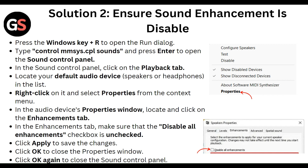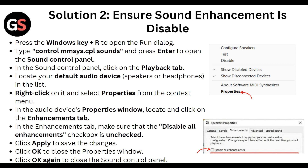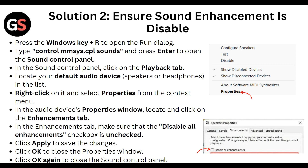Right-click on your default audio device and select Properties from the context menu. In the audio device Properties window, locate the Enhancement tab. In the Enhancement tab, make sure that the 'Disable All Enhancements' checkbox is checked. Click Apply to save the changes, then click OK to close the Properties window and OK again to close the Sound Control Panel.